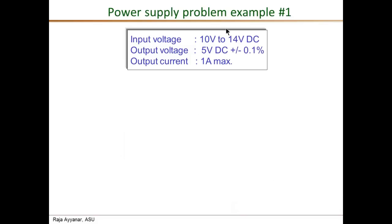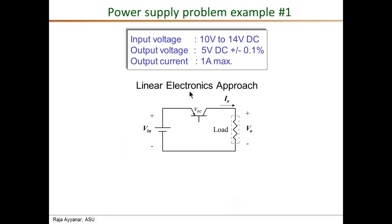Here is power supply problem one. The input voltage can vary from 10 volts DC to 14 volts DC. For example, this could be a 12-volt battery — when fully charged, 14 volts; when fully discharged, 10 volts. From this input, I want to generate a very precisely regulated 5 volts DC output, with a maximum output current of one ampere. Given this specification, if you use a linear electronics approach, one possible circuit is as shown here.